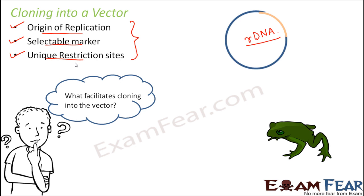Only when cloning into a vector becomes possible can we think of having the recombinant DNA introduced into the body of the target organism. And it is only then that we can imagine that even the frog can glow at night just like the jellyfish.